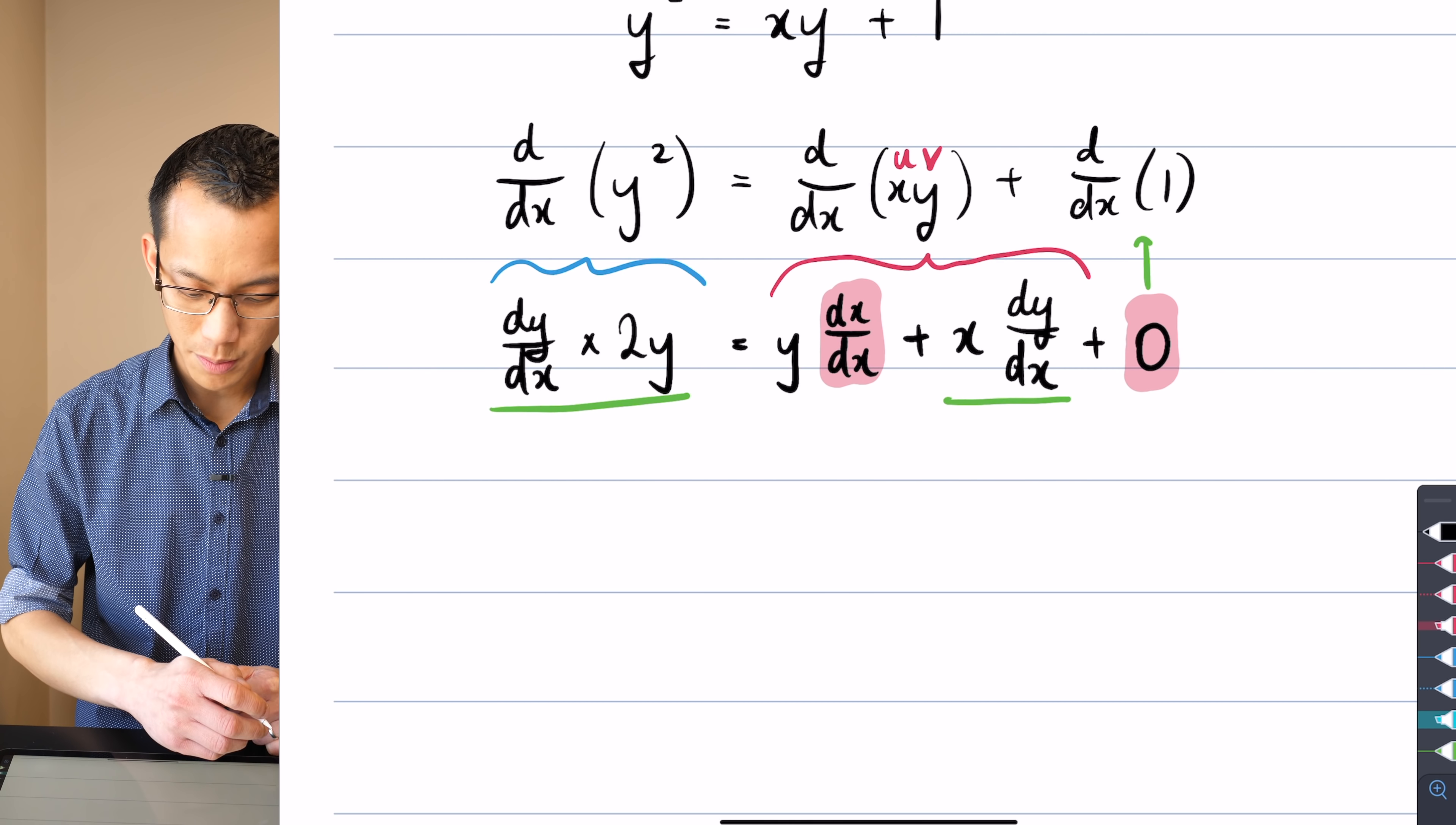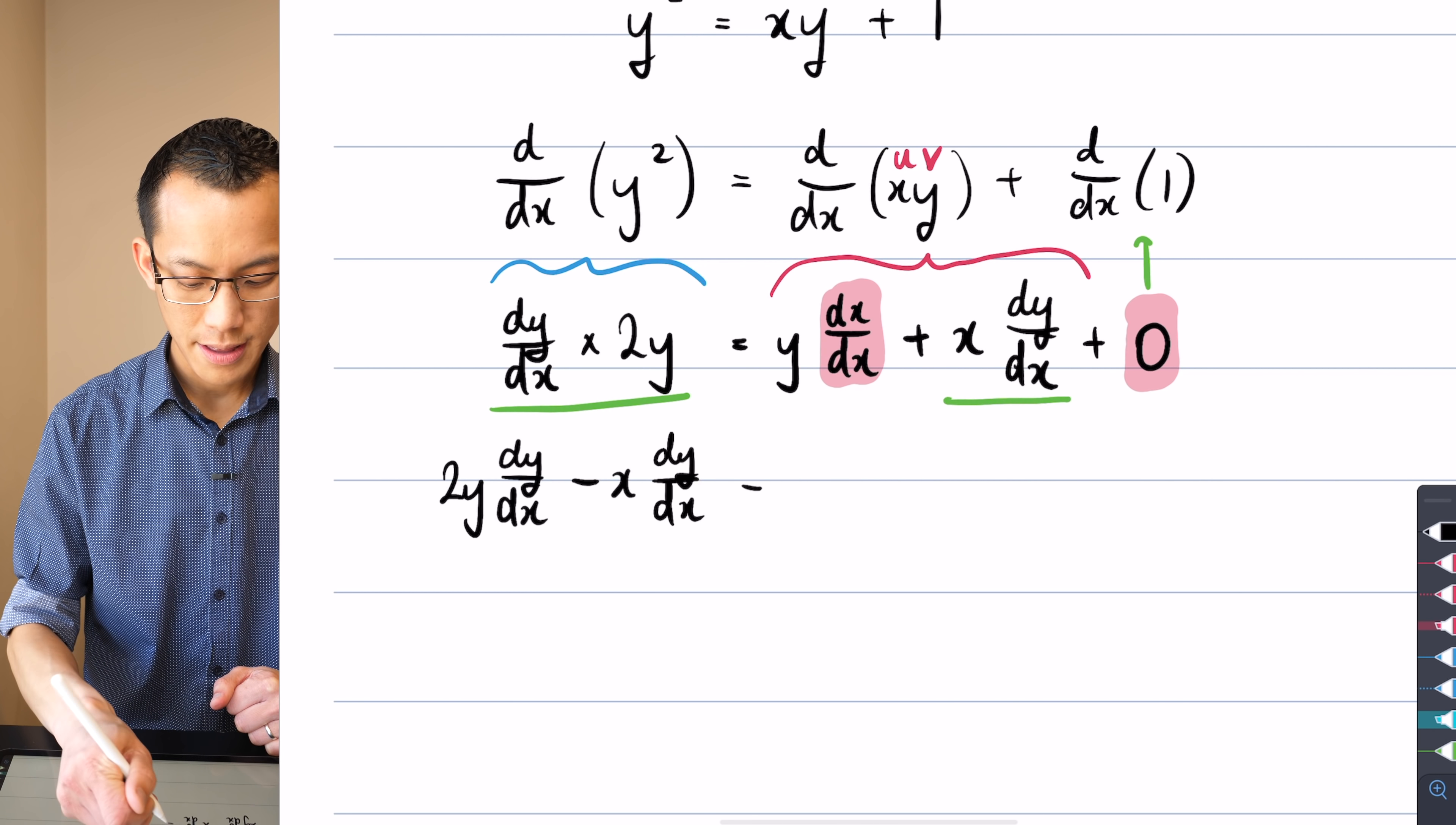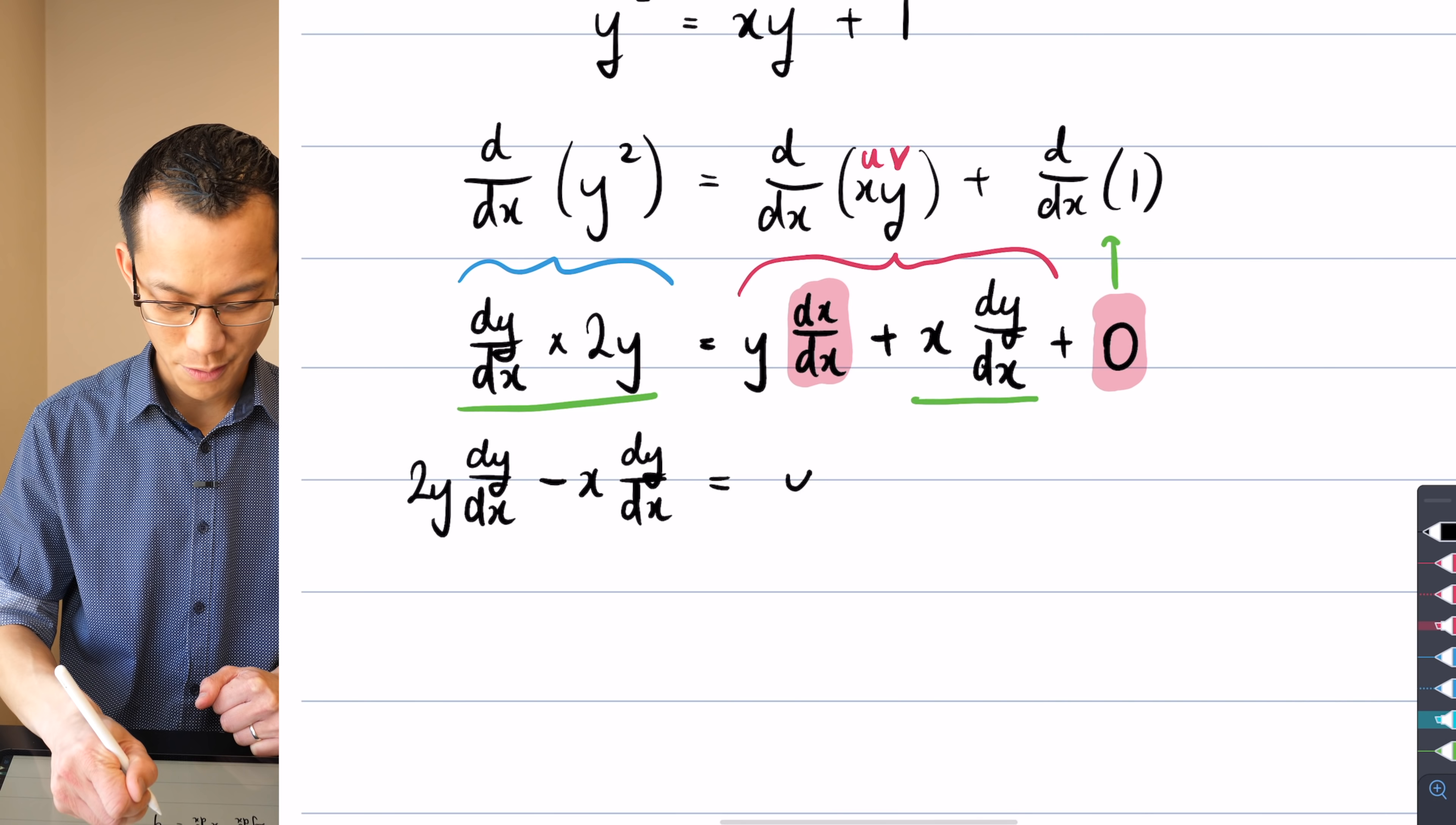And so what I'm going to do is I'm going to collect all these dy/dx terms, which I can see here and here. I'm going to collect them on one side. So that gives me, let's see, I'll do a subtraction. So let's see here, 2y dy/dx take away x dy/dx. That leaves me with, oh sorry, not 0 rather, it's the y which came from here.